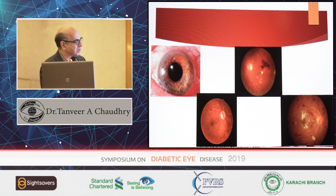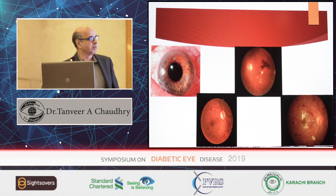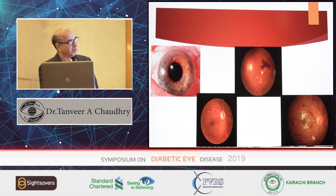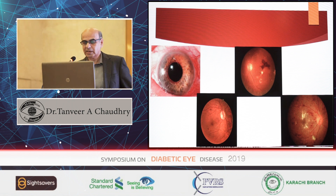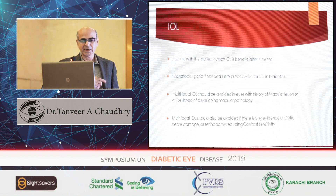A few aneurysms or hemorrhages here and there might not need treatment before surgery. But significant maculopathy shown in the first picture needs treatment beforehand. The other case needs PRP. Make sure that PRP is done properly and every area of maculopathy is addressed before proceeding with anti-VEGF injections.